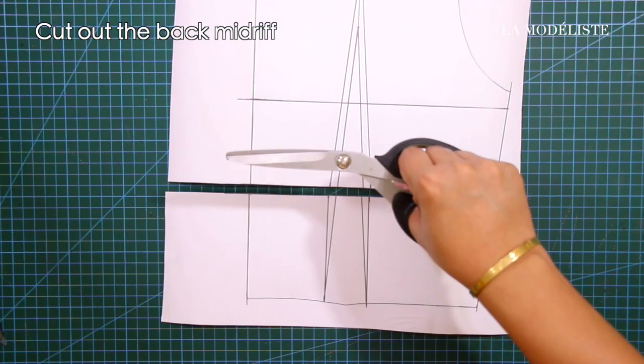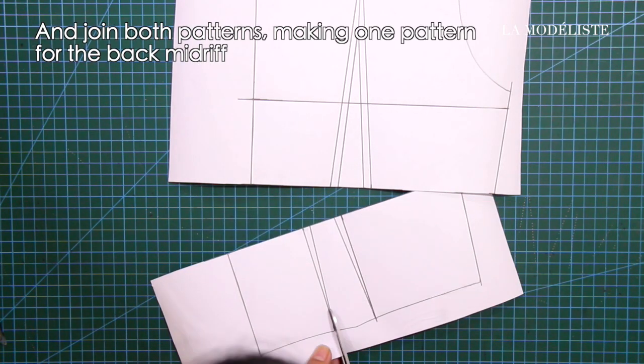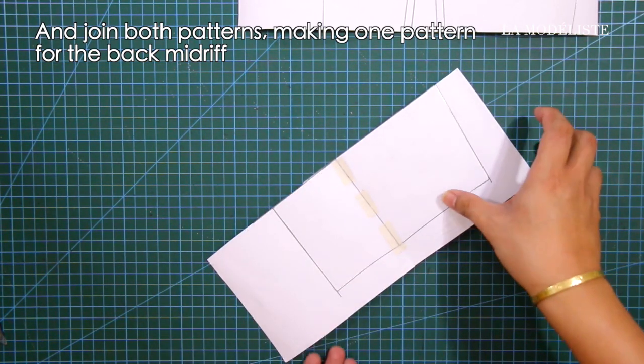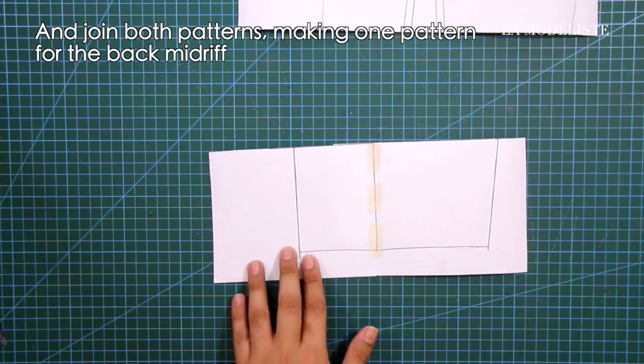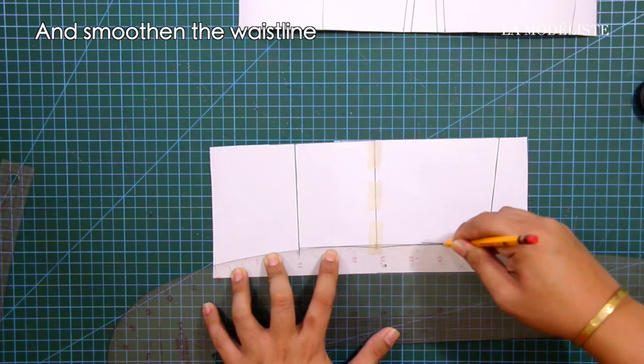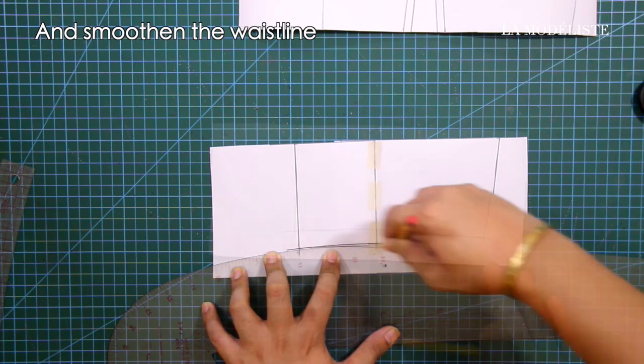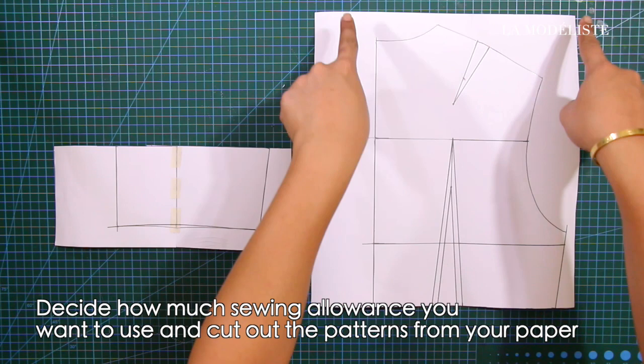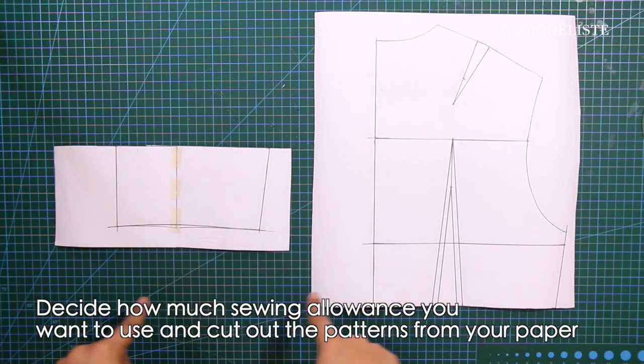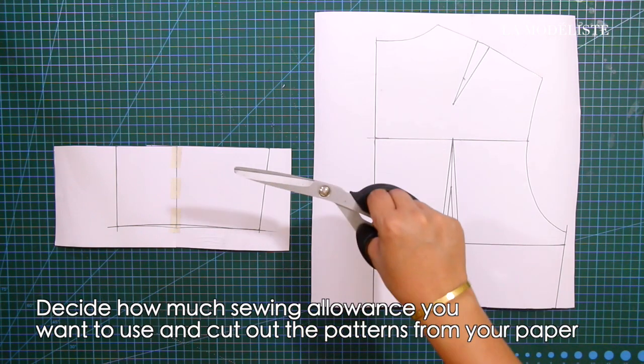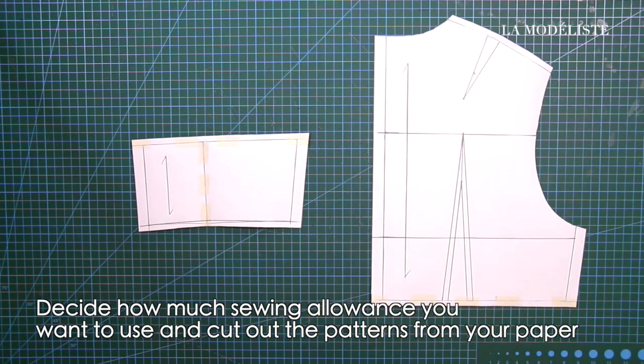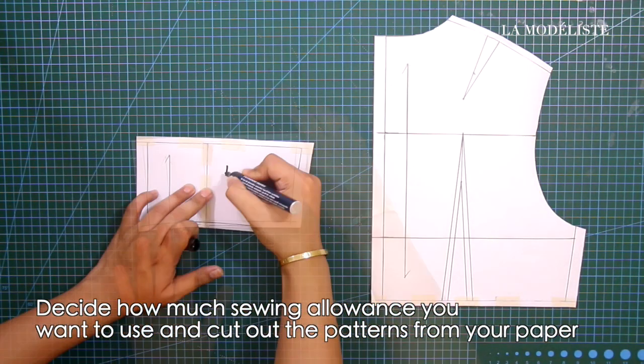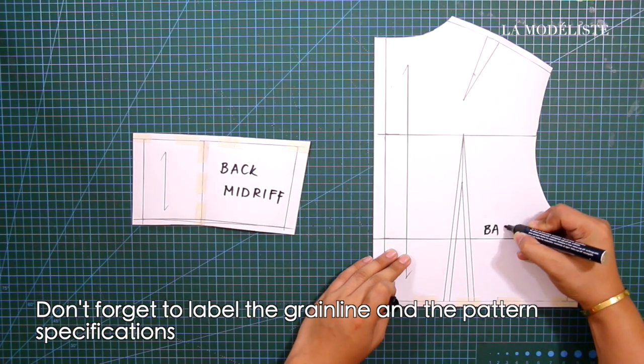Next, cut out the back midriff and join both patterns, making one pattern for the back midriff. And smoothen the waistline. And decide how much sewing allowance you prefer to use and cut out the patterns from your paper. Please don't forget to label the grainline and the pattern specifications.